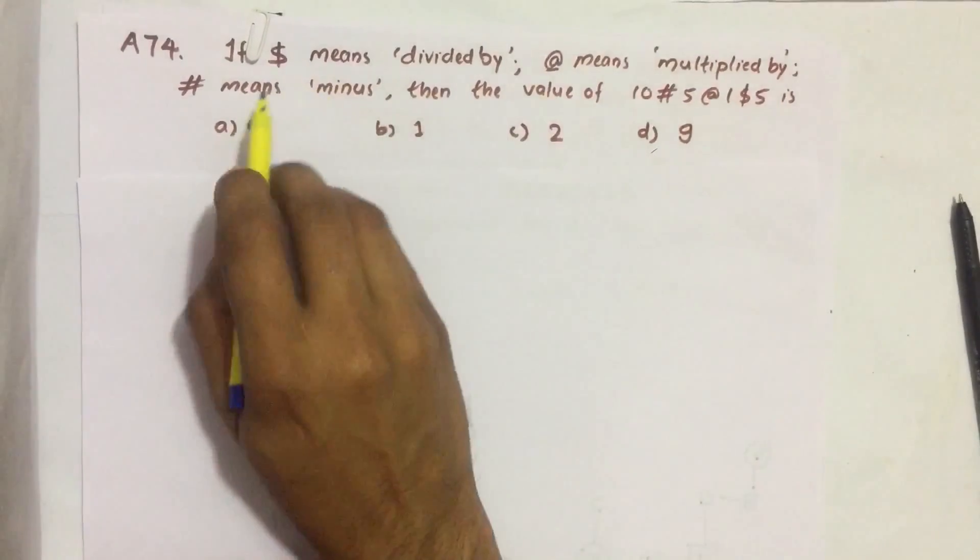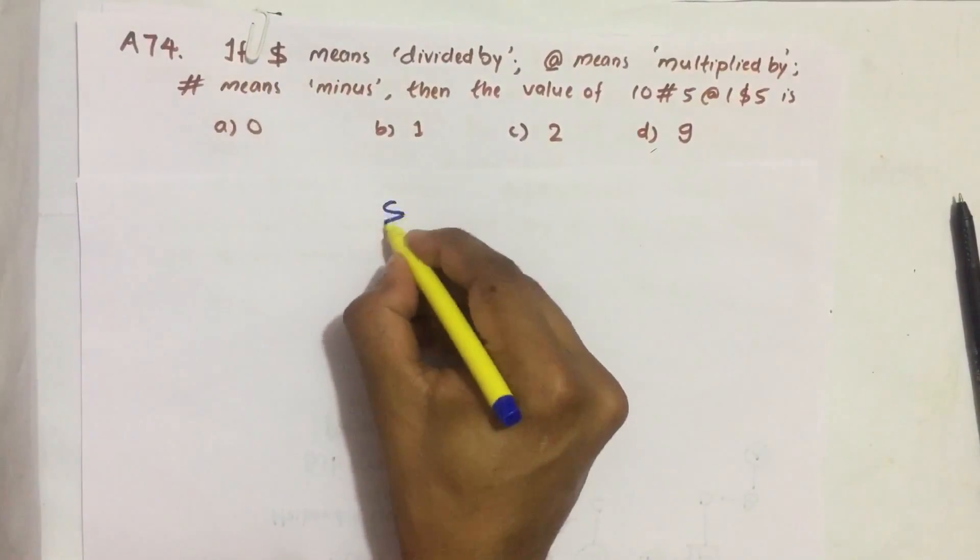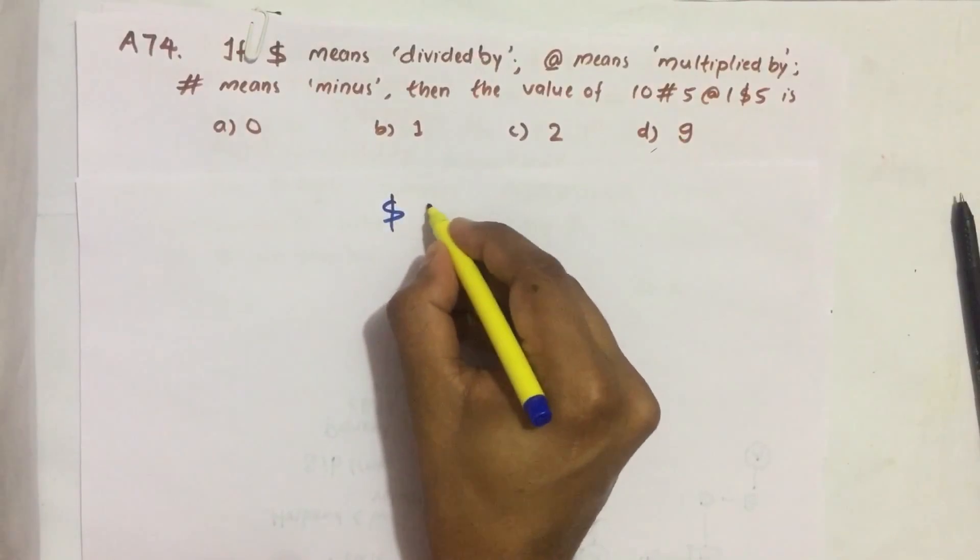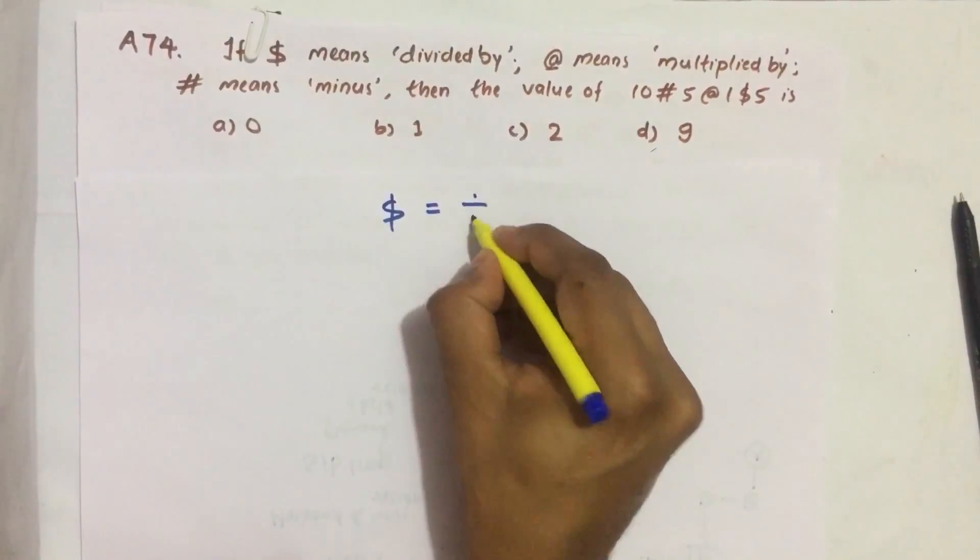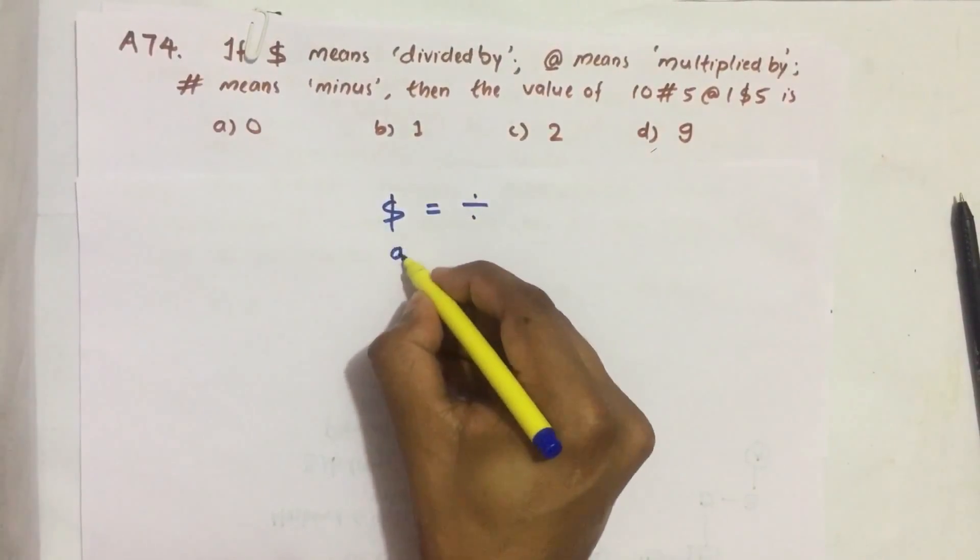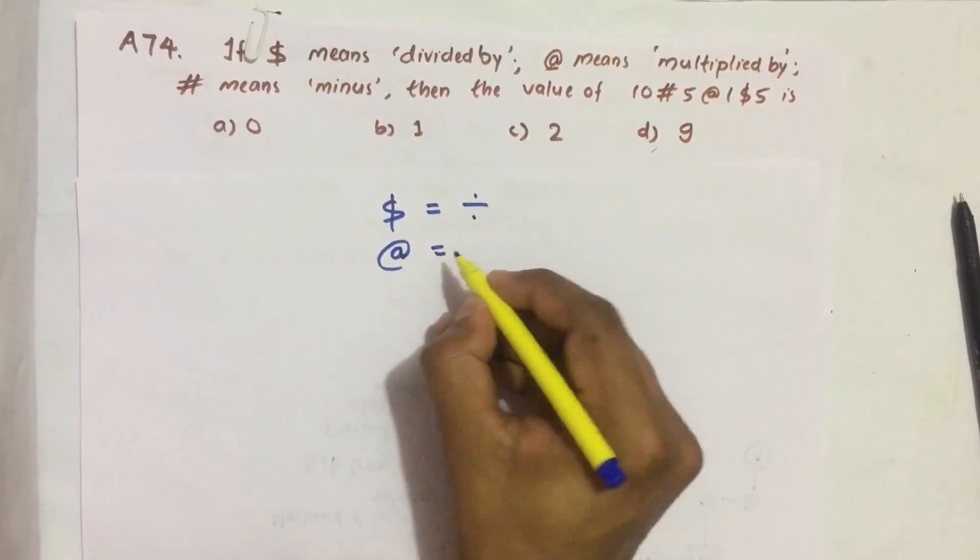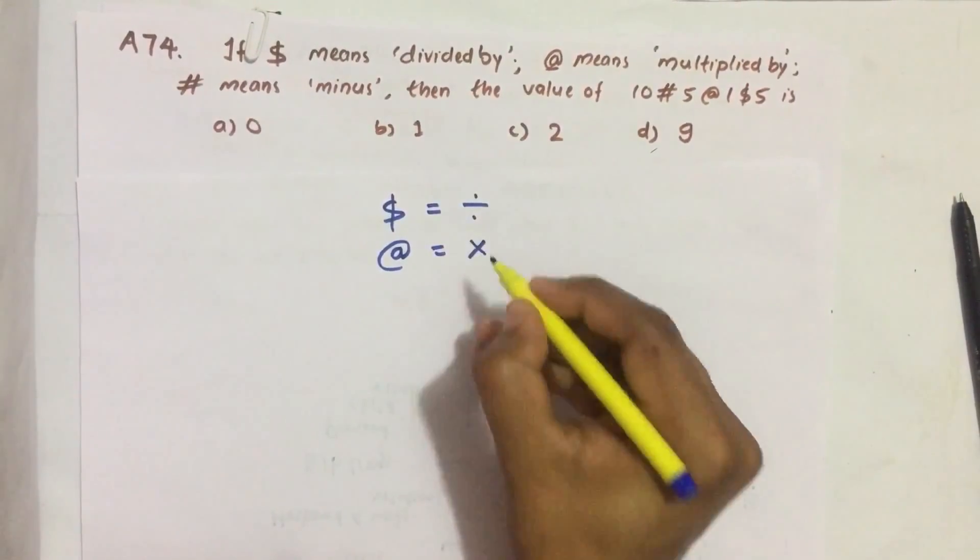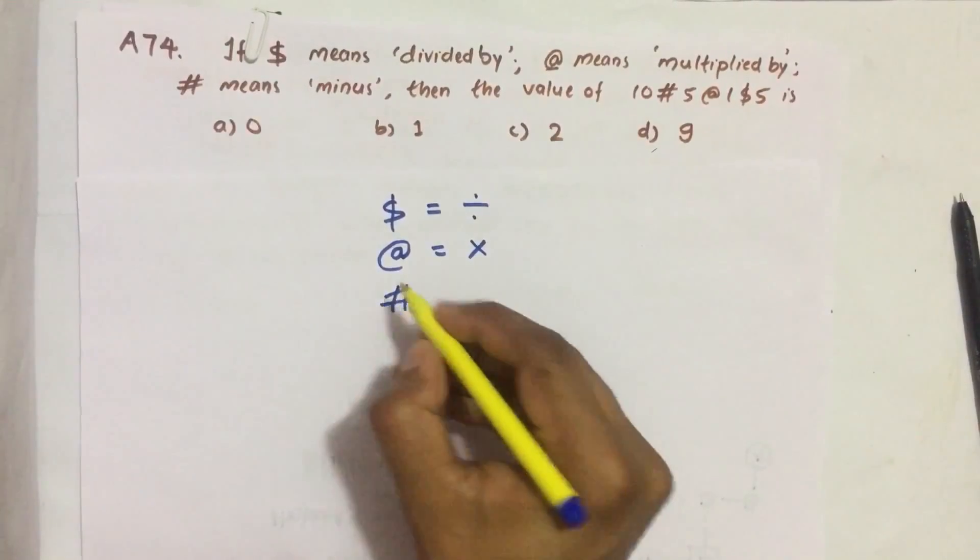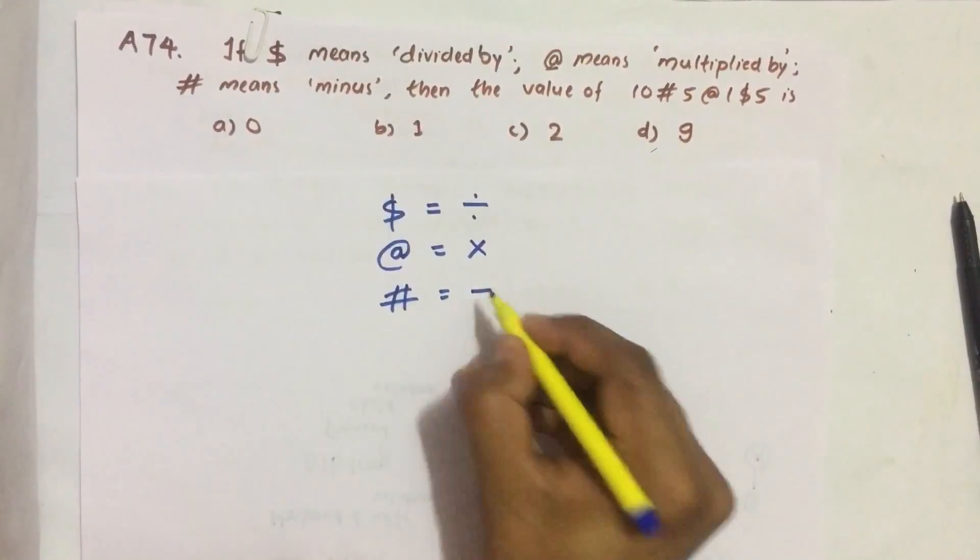So here it is given that dollar sign equals divided by, at sign means multiplied by, hash tag means minus.